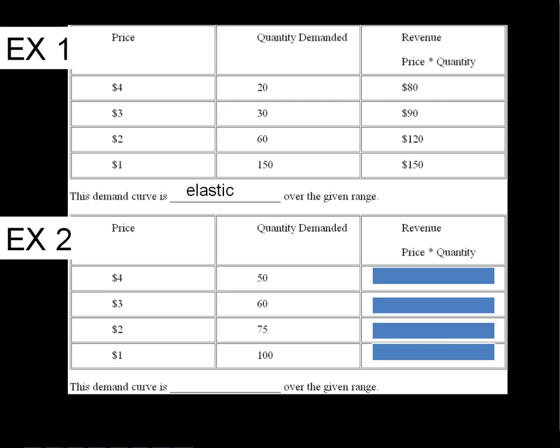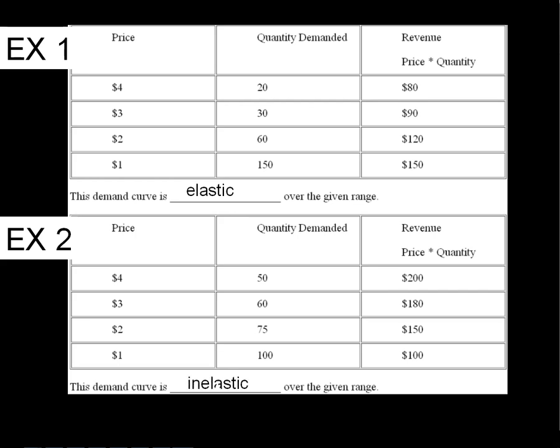Then down here, we've got price times quantity. So four times 50 is 200. Three times 60 is 180. Two times 75 is 150. And one is just 100. So this firm, as they raise their price, they're making more revenue, or conversely, if they lower their price, they're making less revenue. So this is elastic.